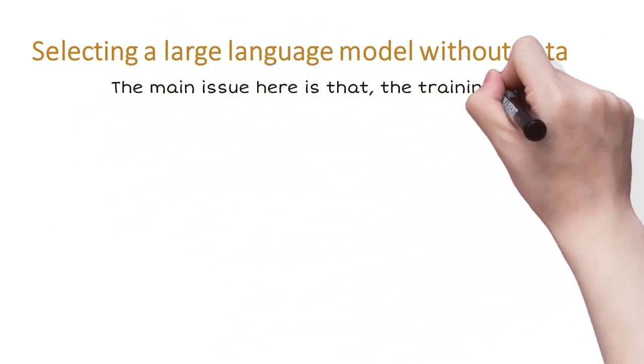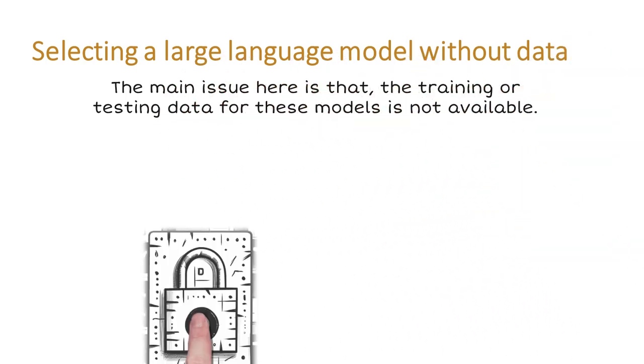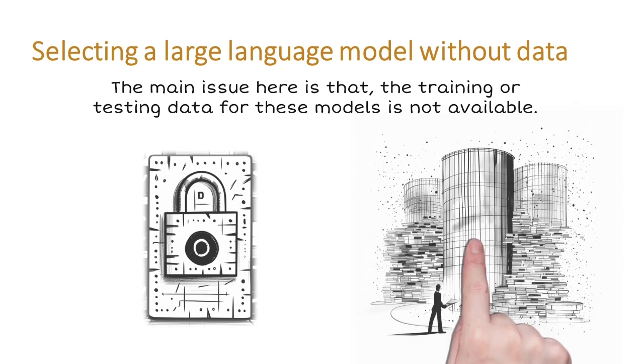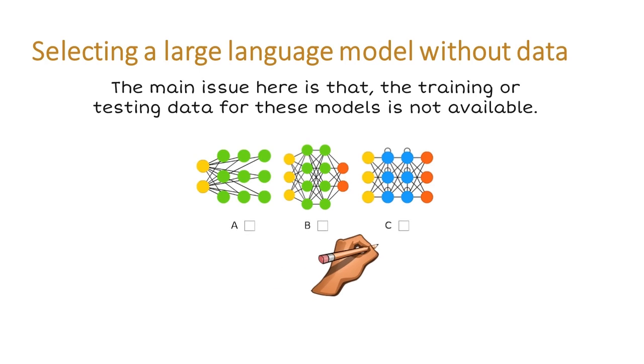The main issue here is that the training or testing data for these models is not available. These models are either trained with internal private data, or the dataset is too complicated to use. Therefore, we need model selection without data.